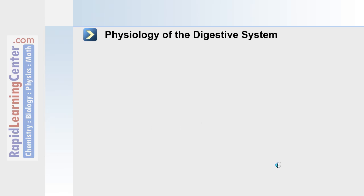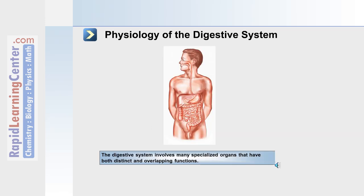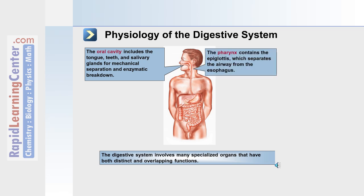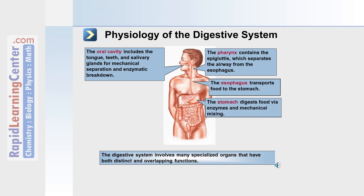The digestive system, or alimentary canal, is made up of the following. First, the oral cavity, where food is processed, mechanically separated, and early enzymatic action takes place. The pharynx contains the epiglottis, which separates the airways from the esophagus during swallowing. The esophagus itself is a tube that transports food to the stomach. The stomach then digests the food via enzymes and mechanical mixing.